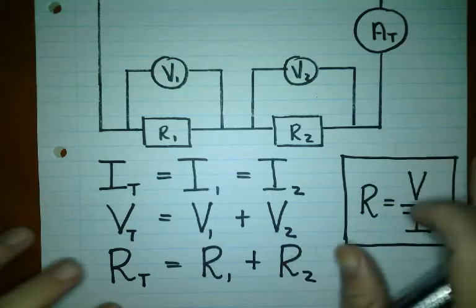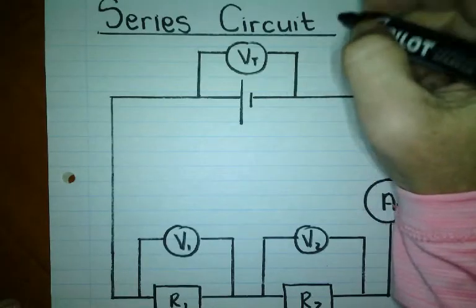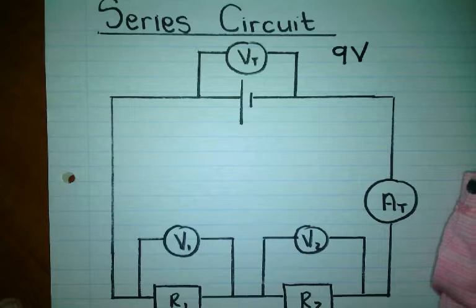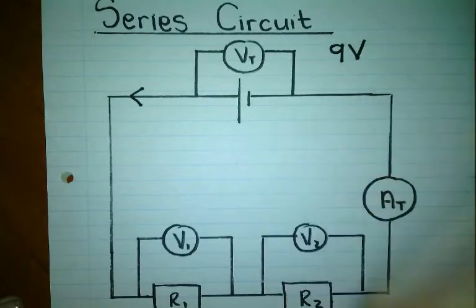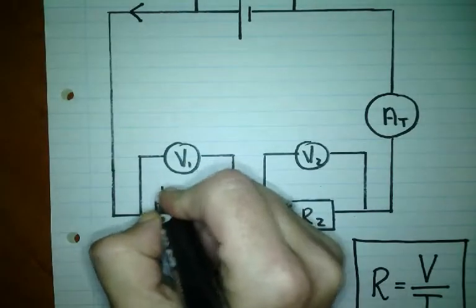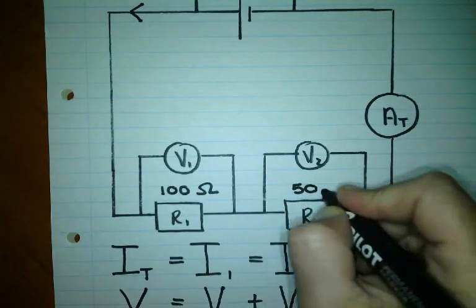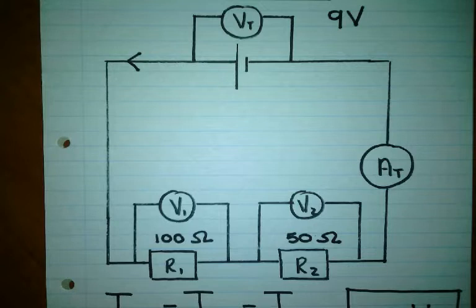So let's do an example — I'm going to use the same values I used in class. We're going to say the total voltage, the energy supplied by the cell to the circuit, is 9 volts. Please remember that conventional current runs from positive terminal to negative terminal. Resistor 1 is 100 ohms and resistor 2 is 50 ohms. That's the information you get given. For Grade 9, this is what you are going to be given.